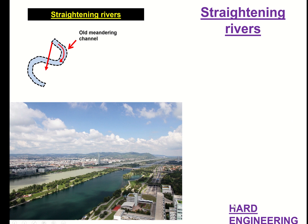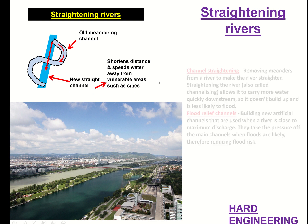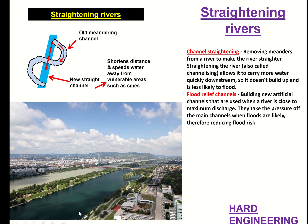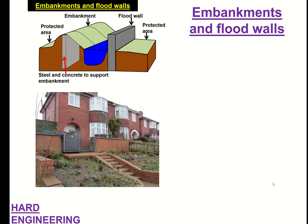The second hard engineering strategy is channel straightening. If you have a meandering river, you cut off the meanders and dig a new straight channel, which shortens the distance and speeds water away from vulnerable areas. A flood relief channel involves digging an extra new artificial channel that absorbs water when the river is close to maximum discharge, taking pressure off the main channel. The positives are less friction and water flowing away faster, reducing flooding in urban areas. The negatives are that flooding is more likely downstream, it can cause more erosion, and it is expensive.